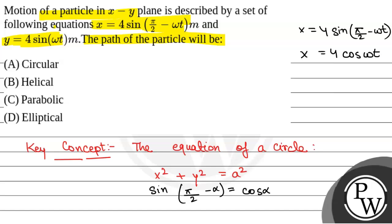x will be equal to 4 cos omega t and y is given as 4 sin omega t. x square plus y square will be equal to 16 cos square omega t plus 16 sin square omega t.